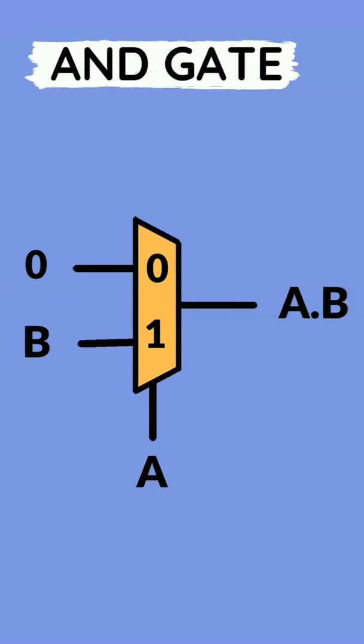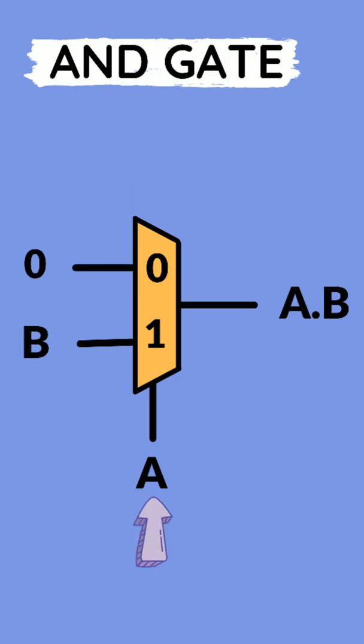For AND gate, we have zero and B as inputs and A as select line. So output is A and B.